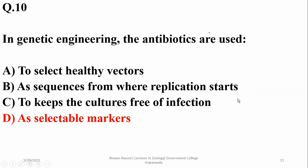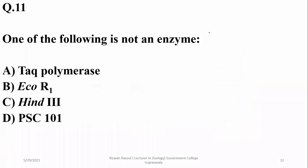Which of the following is not an enzyme? Taq polymerase is a thermostable enzyme; EcoR1 is a restriction enzyme; HindIII is another restriction endonuclease enzyme — but pSC101 is the name of a vector or plasmid, so delta is the answer.